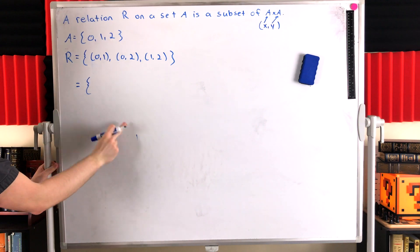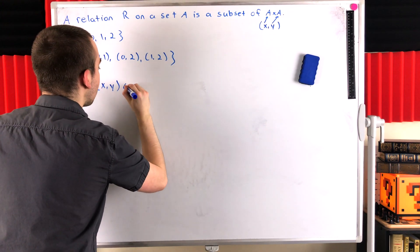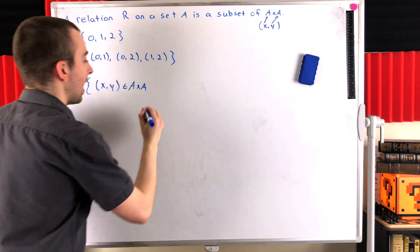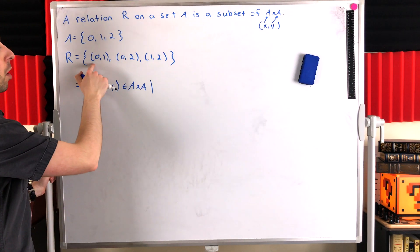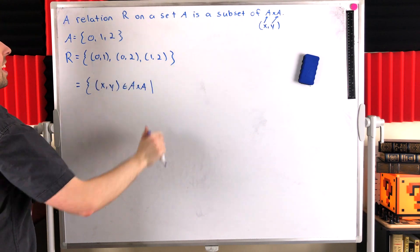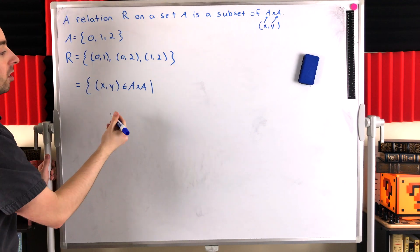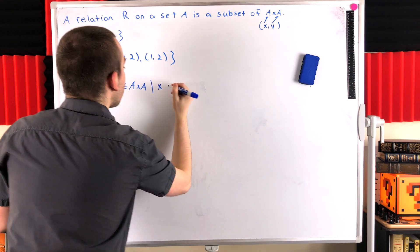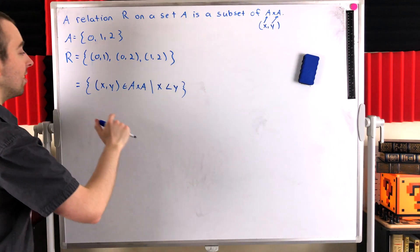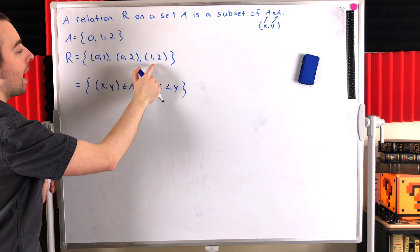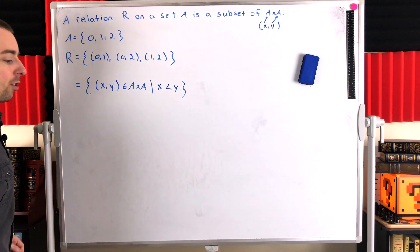Here's just another way we could write the set R in set builder notation. We could write it as: the set containing all ordered pairs (x, y) that are in the Cartesian product A cross A. What's going to be the defining property of this relation? Notice 0 is less than 1, 0 is less than 2, and 1 is less than 2. So in fact, the relation we have is the set of all ordered pairs in A cross A where the first entry is less than the second entry, y. You can check by hand to see that this is indeed our relation R — these are all ordered pairs in A cross A where the first entry is less than the second entry.